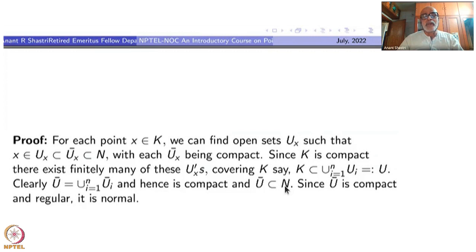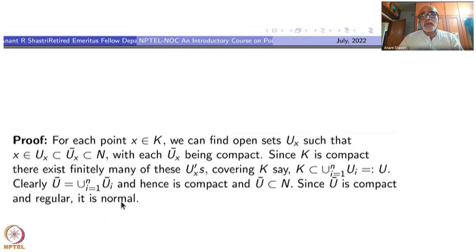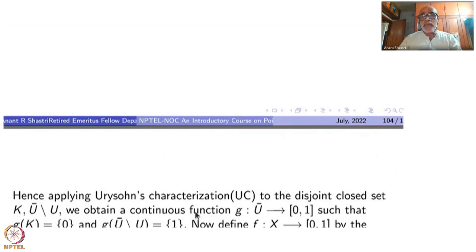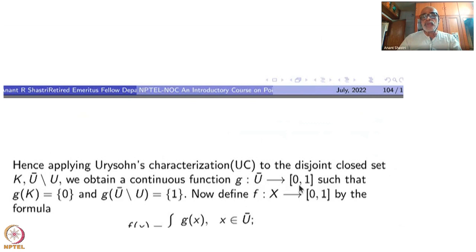The first part is done. Now Ū is compact, and we are working inside a locally compact space. As a closed subspace it is locally compact, hence regular, and a locally compact regular space is normal. So Ū itself is normal. Therefore we can apply Urysohn's characterization to K and Ū \ U: K is a closed subset, Ū \ U is another closed subset, they are disjoint, so there exists a function g from Ū to [0,1] with g(K) = 0 and g(Ū \ U) = 1.